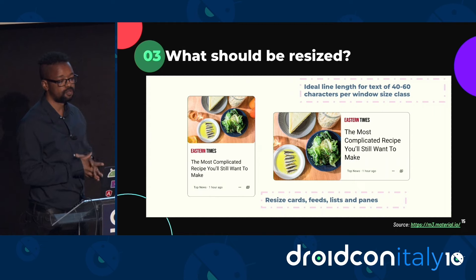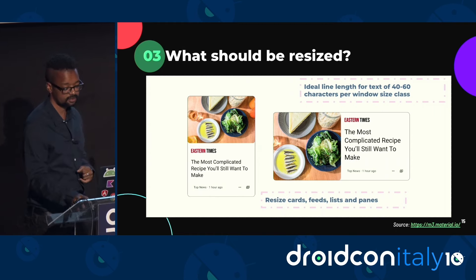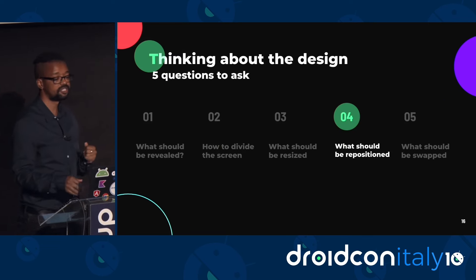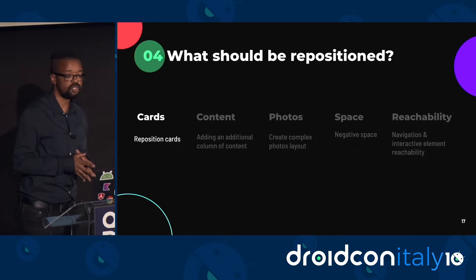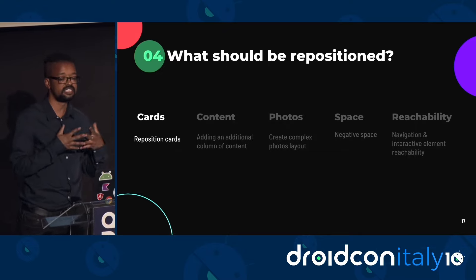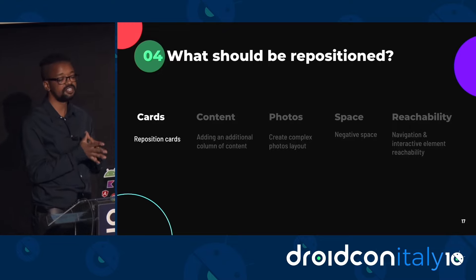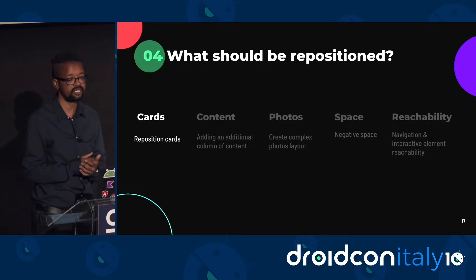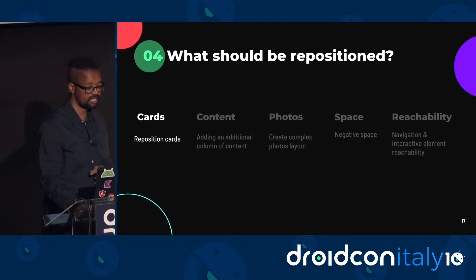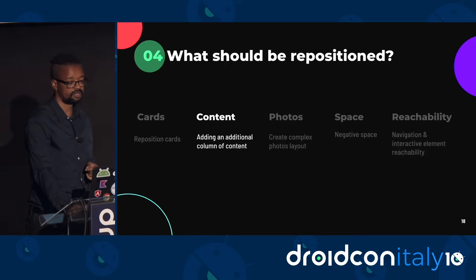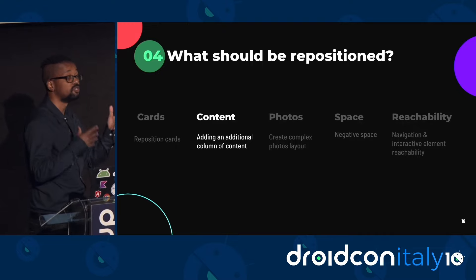The ideal length for text is 40 to 60 characters per every window size class. The fourth question is: what should be repositioned? What is contained on a UI can be moved around to take advantage of the additional space available. By understanding that bigger screen size means a higher need to ensure clickable elements can easily be reached, the guide proposes repositioning cards, adding an additional column of content such as in a news app, thereby broadening what content the user will be able to access.